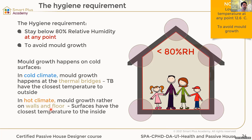In a hot climate, mold grows on the walls and floors — surfaces that have the closest temperature to the inside. When we cool it down, the relative humidity goes up in the building, the surfaces get colder, and we have condensation issues on walls and floors. So in hot climate, it's rather walls and floors; in cold climate, it's rather the thermal bridges.